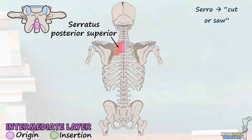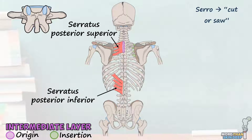The function of serratus posterior superior is to elevate the ribs and thus aid in respiration. Acting like an evil twin to this muscle is the lower serratus posterior inferior. This muscle originates from the spinous processes of T11 to L2 and inserts into the ninth to twelfth ribs. Its function is to depress the lower part of the rib cage, also assisting in respiration. And that's it for the intermediate back muscles.